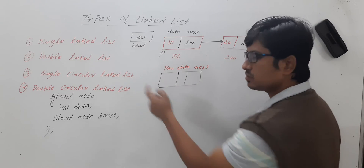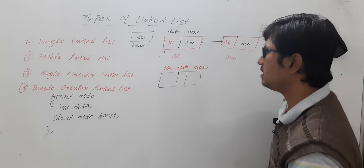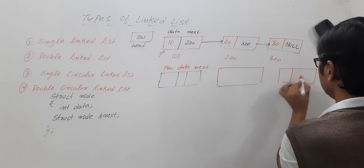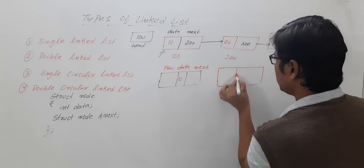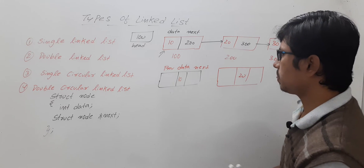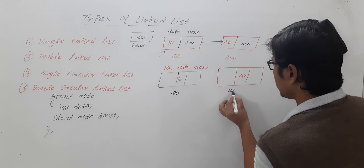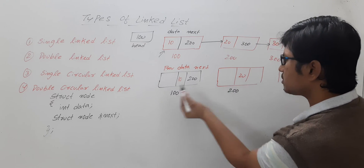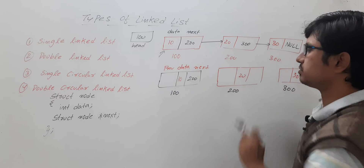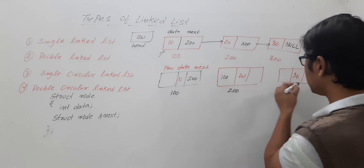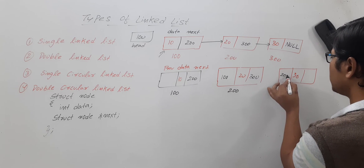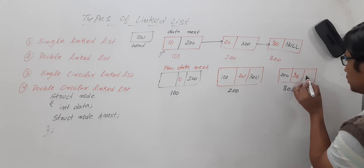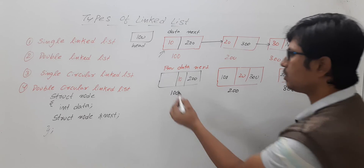Each node has: address of the previous node, data, and address of the next node. Consider three nodes with data 10, 20, and 30 at addresses 100, 200, and 300 respectively. The first node's next pointer holds 200. The second node's previous pointer holds 100 and next pointer holds 300. The third node's previous pointer holds 200, and its next pointer is null since it is the last node. The first node's previous pointer is null since there is no node before it.